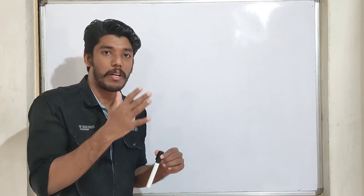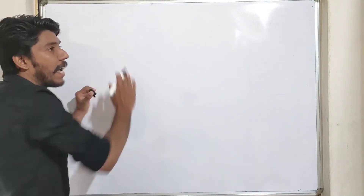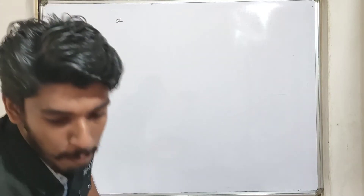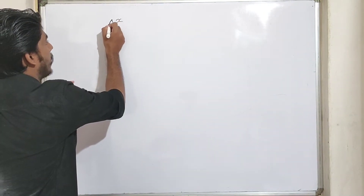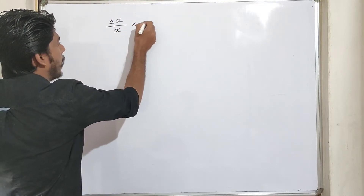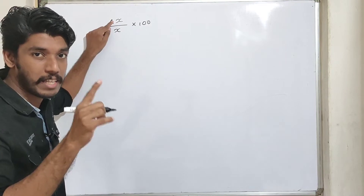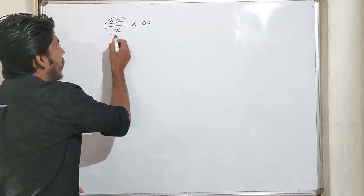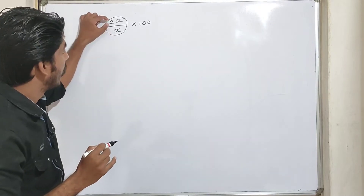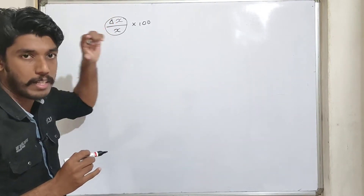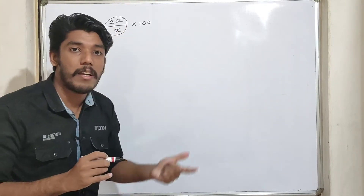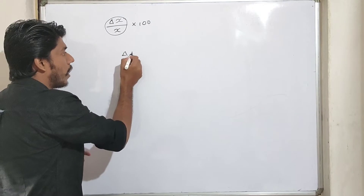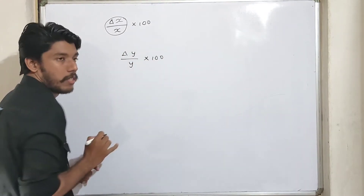First, we have percentage error. The percentage error formula is delta x by x into 100. Here, x is the true value, and delta x is the error. This means a relative error. The format is delta x by x into 100, and similarly for y: delta y by y into 100.